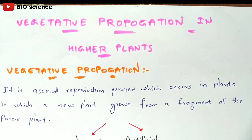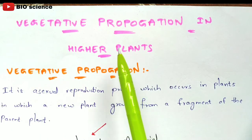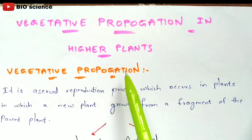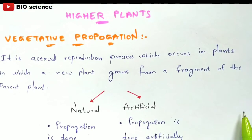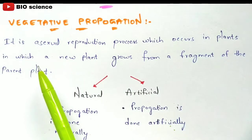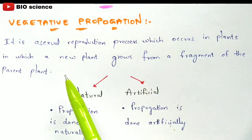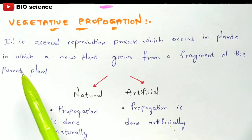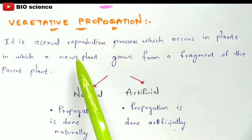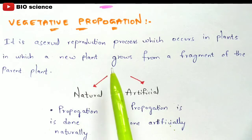In this video we are going to discuss vegetative propagation in higher plants. Vegetative propagation is an asexual reproduction process which occurs in plants, in which a new plant grows from a fragment of the parent plant. The parent plant is highly necessary to generate a new baby plant, and this process can be done in two types.